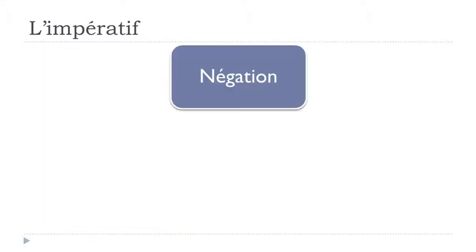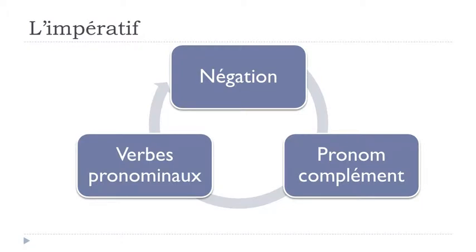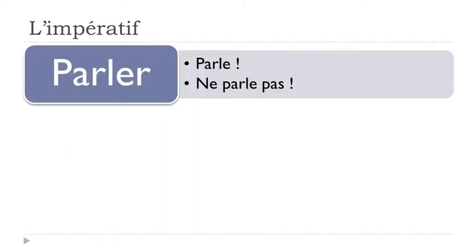Now let's see the negative form of the imperatif. It's quite easy: you just put 'ne' before the verb and 'pas' after. For example: 'Parle!' becomes 'Ne parle pas!', 'Finissons!' becomes 'Ne finissons pas!', and 'Mettez!' becomes 'Ne mettez pas!' You don't change anything else.